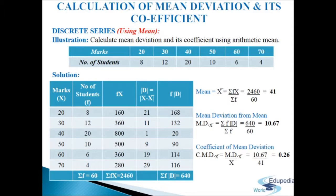In the fourth column we write d = x minus mean. Mean is 41, so: 20−41 = 21, 30−41 = 11, 40−41 = 1, 50−41 = 9, 60−41 = 19, 70−41 = 29 (ignoring plus/minus signs). In the last column we write f·d, the product of frequency and d.